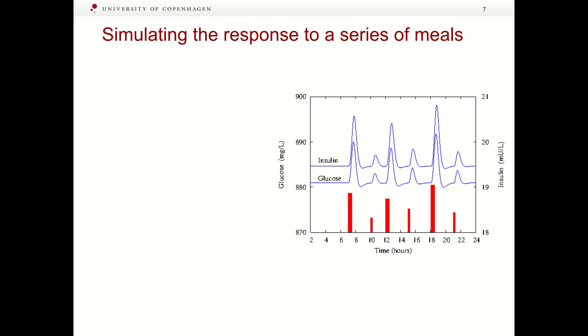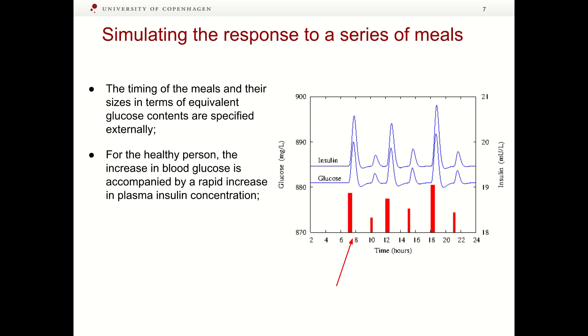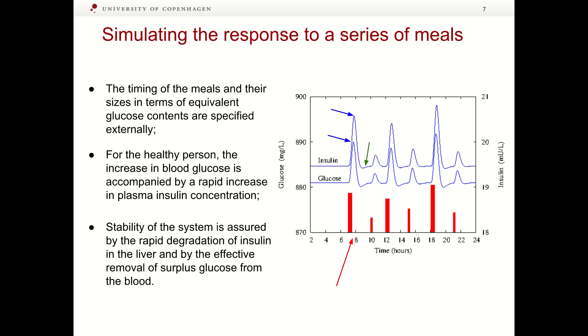This figure illustrates the result of simulation with the basic model of insulin-glucose regulation. The timing of the meals and their sizes in terms of amount of glucose are specified externally. For a healthy person, the increase in blood glucose is accompanied by a rapid increase in plasma insulin concentration. The stable equilibrium of the system is soon restored by the rapid degradation of insulin in the liver and by the removal of surplus glucose from the blood.